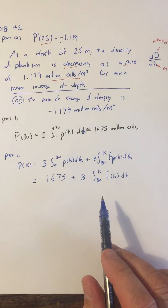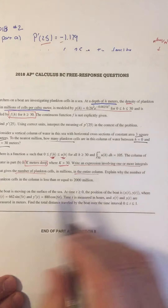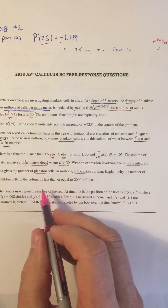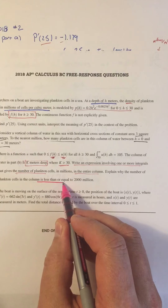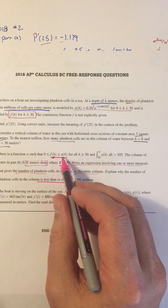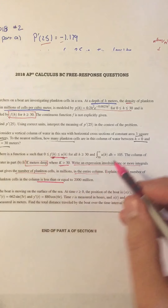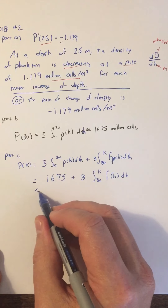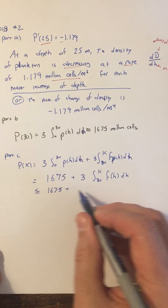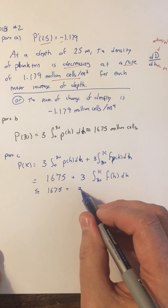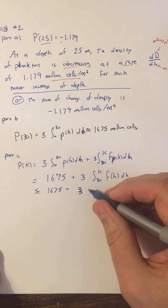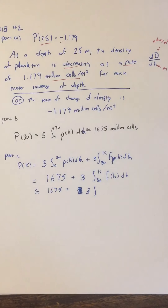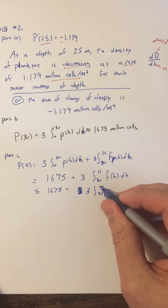That's our expression. The next part asks us to explain why the number of plankton cells is less than or equal to 2000 million. We're not asked for the exact value, but we have inequalities to work with: f is less than u, and k is less than infinity. So the full expression is less than or equal to 1675 plus 3 times the integral from 30 to infinity of f of h dh.